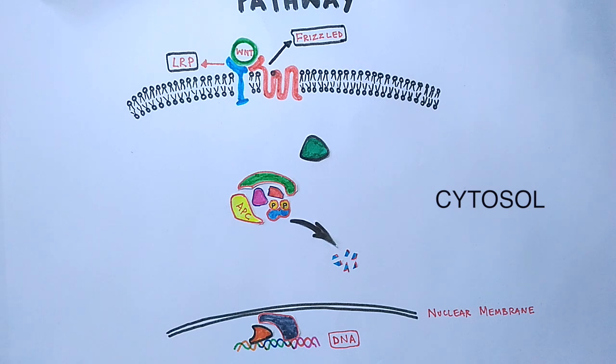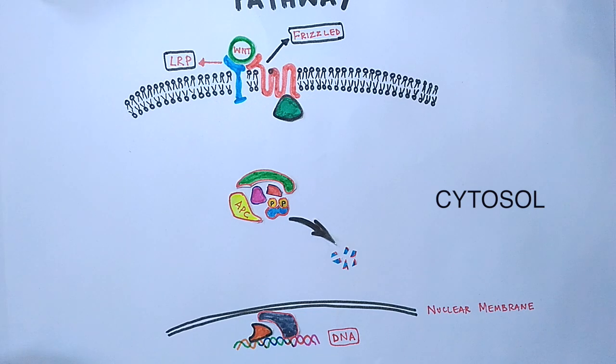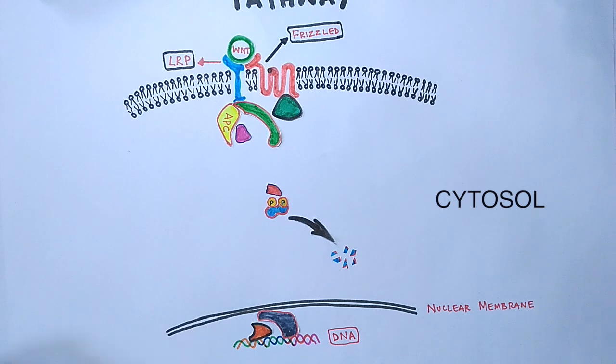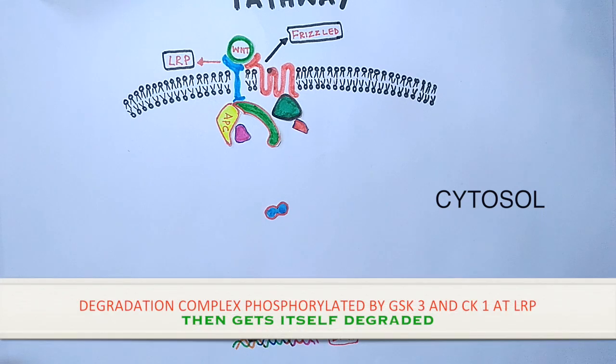The first event in this pathway is the recruitment of dishevelled protein towards the Frizzled receptor, as it is the negative regulator of WNT pathway. After that, there is recruitment of degradation complex towards the plasma membrane, more towards the LRP receptor, where all these degradation complex components are getting inactivated.